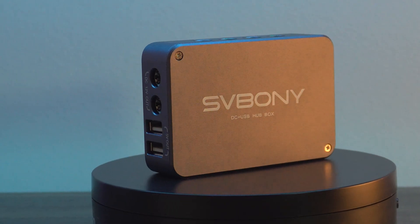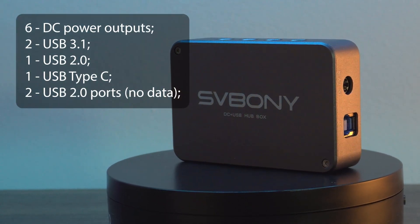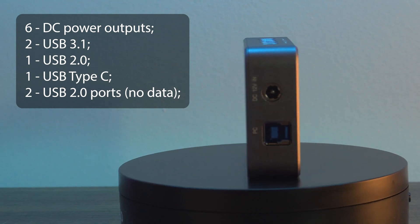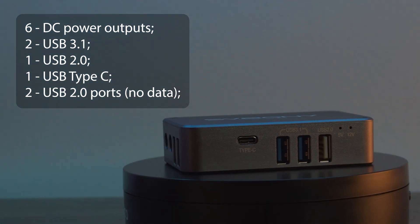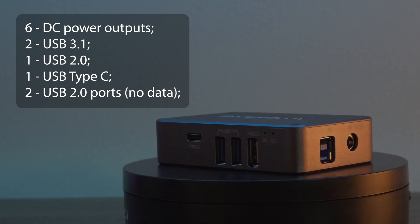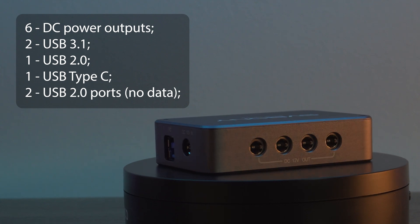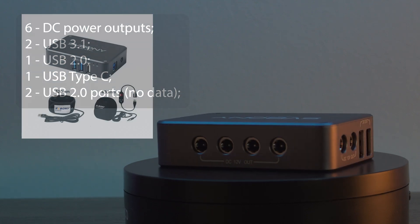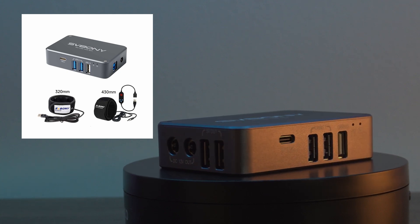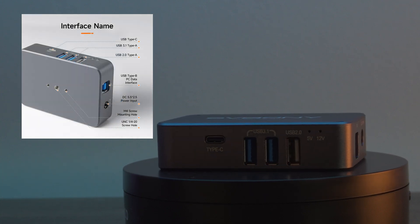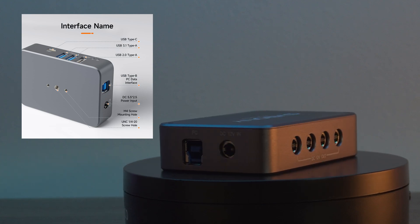SV241 power box offers the following: 6 DC power outputs, 2 USB 3.1 for devices that require data transmission, 1 USB 2.0 for simpler devices like a mount or electronic focuser, 1 USB Type-C port and 2 USB 2.0 ports that do not support data transfer, but rather work as power ports with 5V output to power your dew heaters. The power input is a common DC port and the input USB interface is USB Type-B.